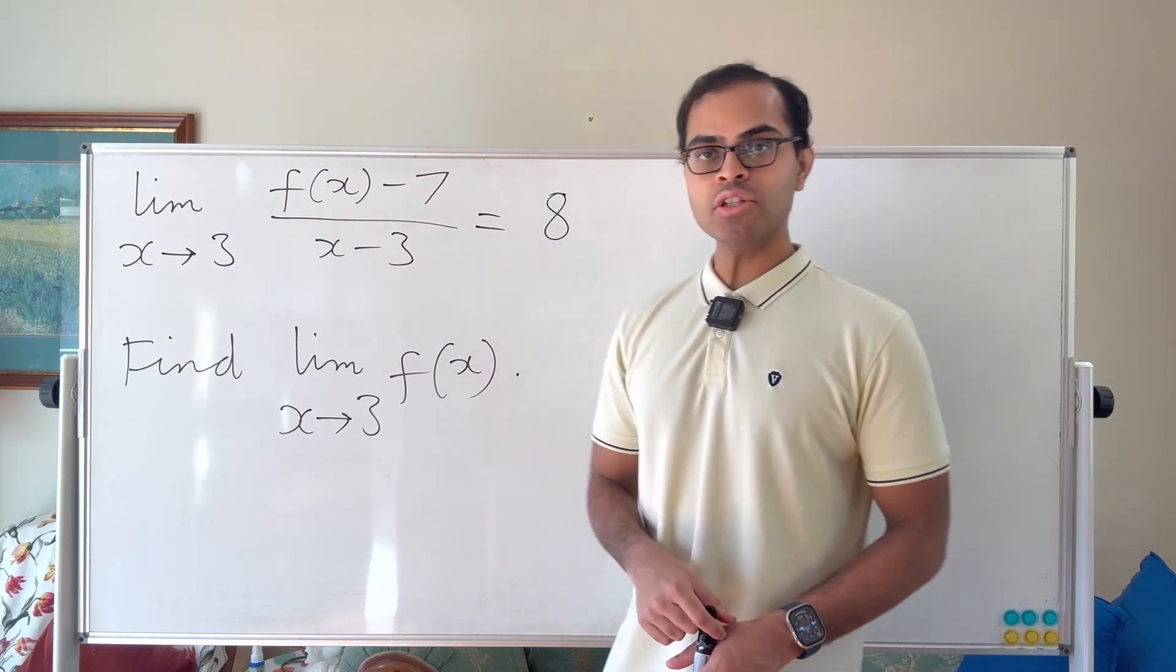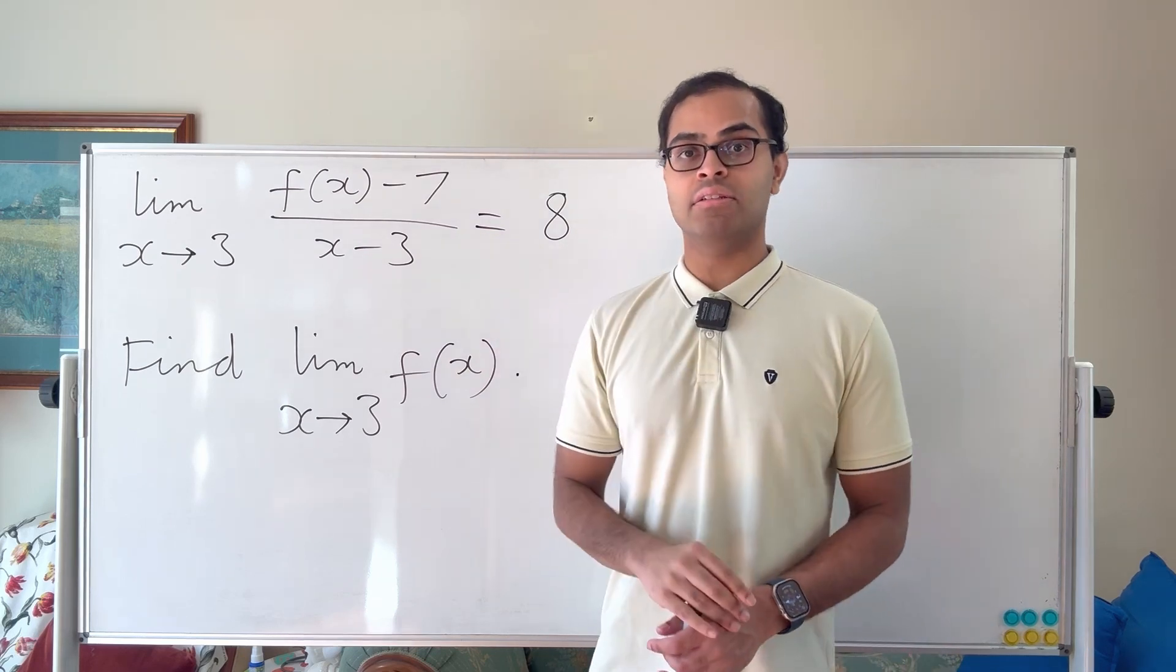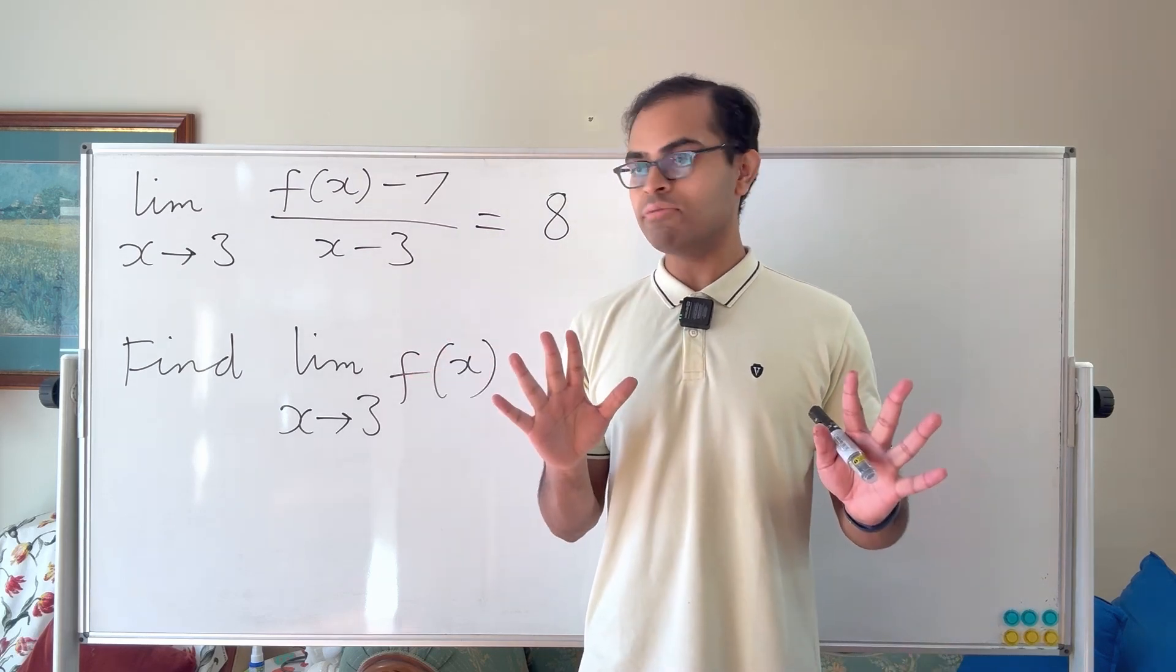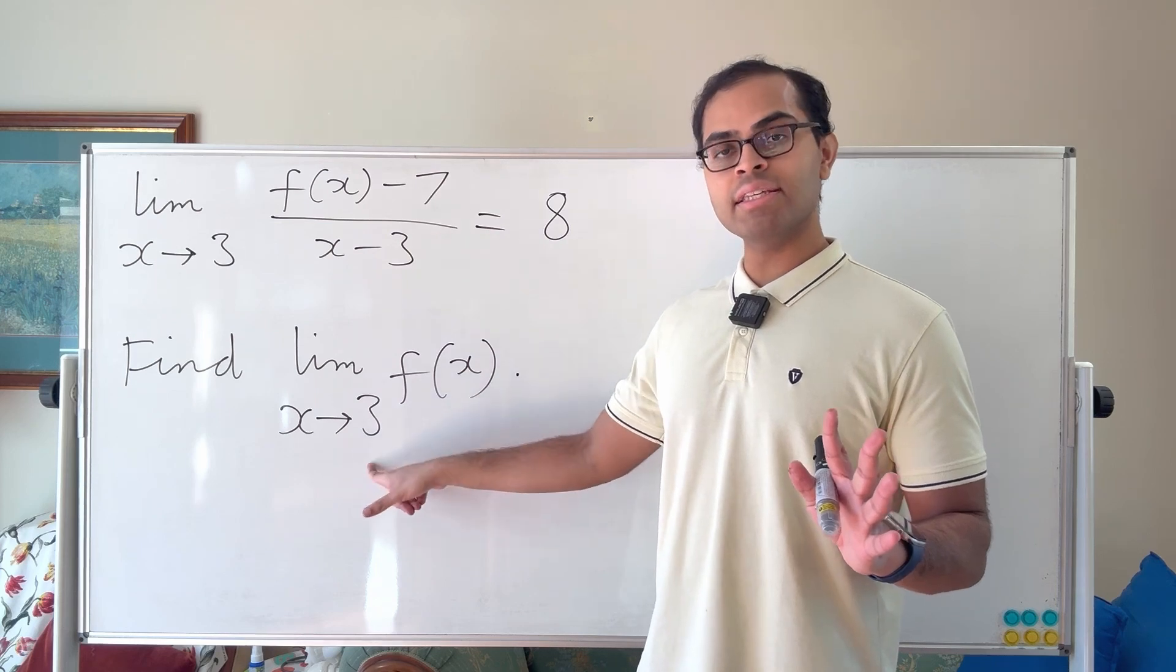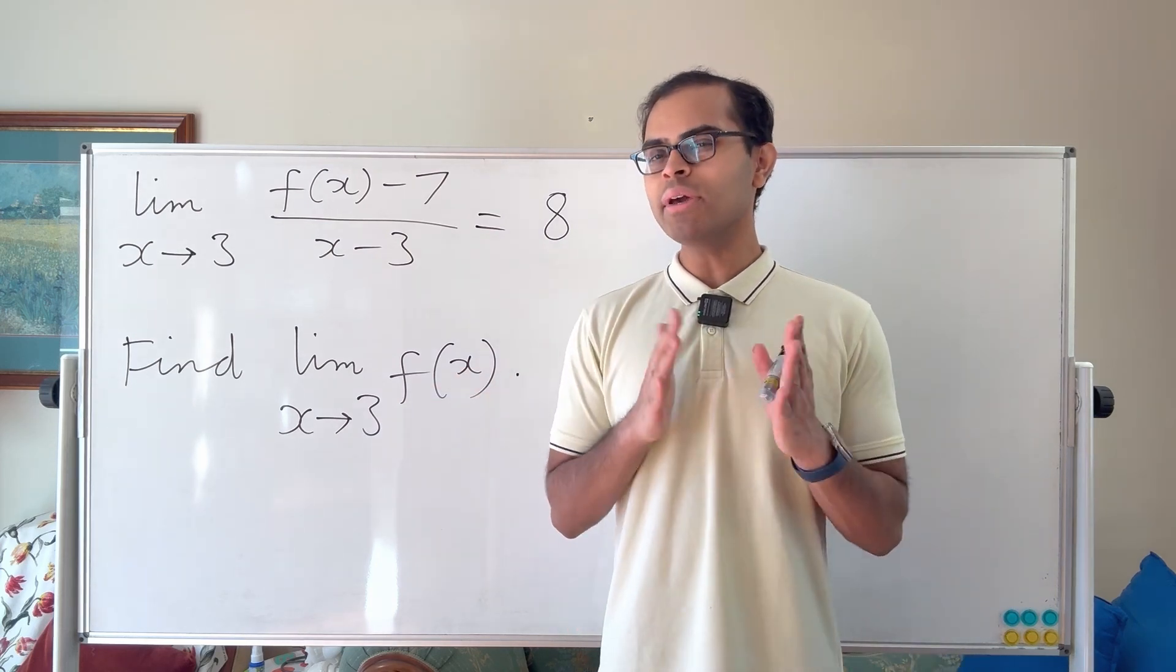So here we have the limit as x goes to 3 of f of x minus 7 over x minus 3 is equal to 8. We're given that information. We want to find the limit as x goes to 3 of f of x if it's possible to do. So how are we going to approach it?